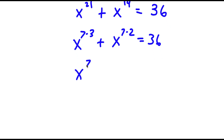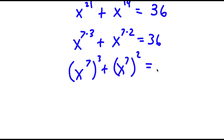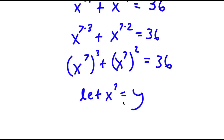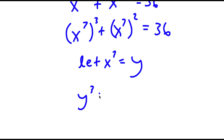I'm going to put this as x to the power of 7 to the power of 3, plus x to the power of 7 to the power of 2, is equal to 36. Now I can let x to the power of 7 equal to the variable y. So now I have y to the power of 3 plus y squared is equal to 36.